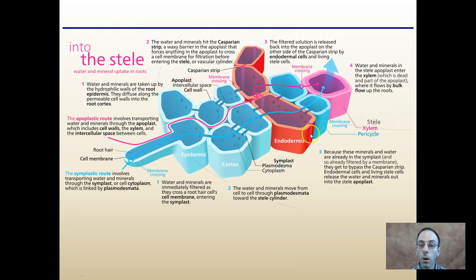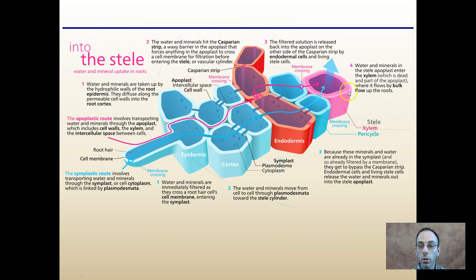Within the roots, we have the endodermis and the Casparian strip, found in all roots. This is a waxy, lipid-based barrier that forces anything in the apoplast to cross the cell membrane for filtration before entering the next step. This physical check allows certain water and minerals in while preventing other materials from getting through. Xylem carries flow upward from the roots to the shoots.